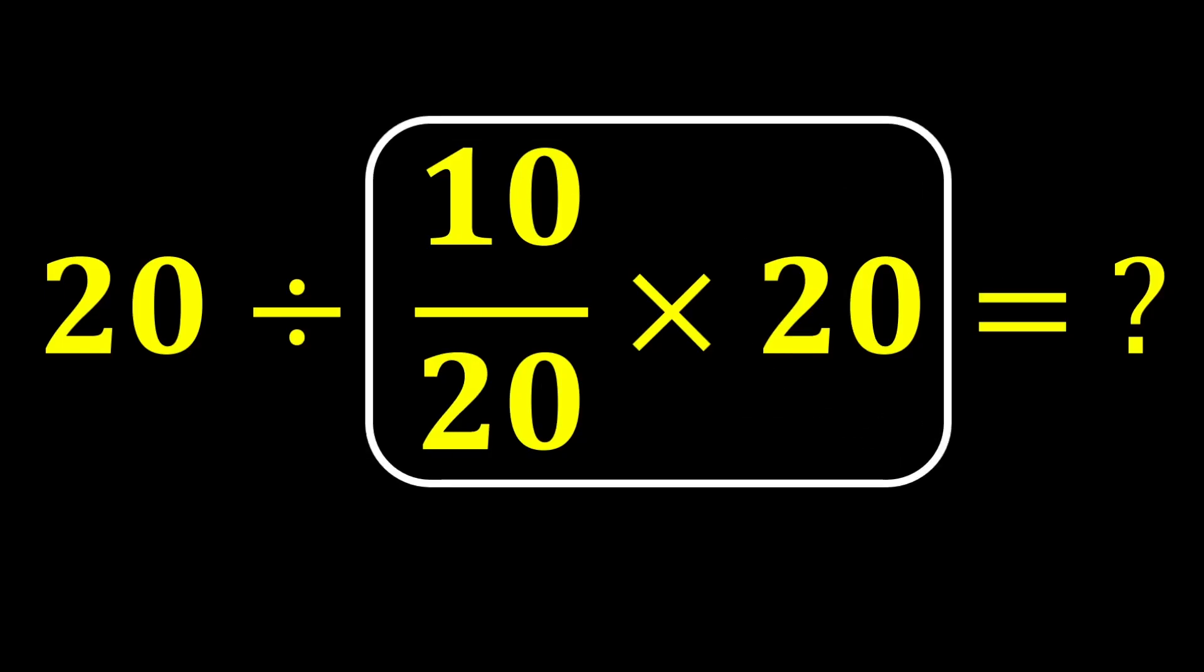First, we do this multiplication, 10 over 20 multiplied by 20. This 20 and this 20 simplify with each other, and here only 10 remains.